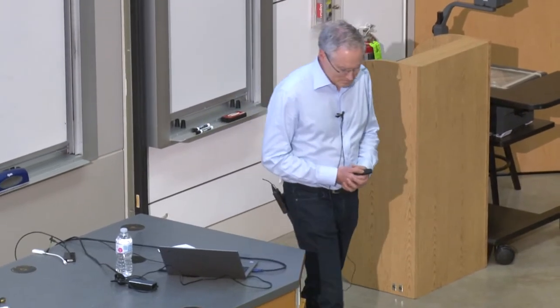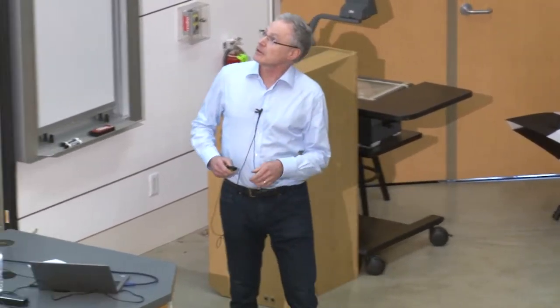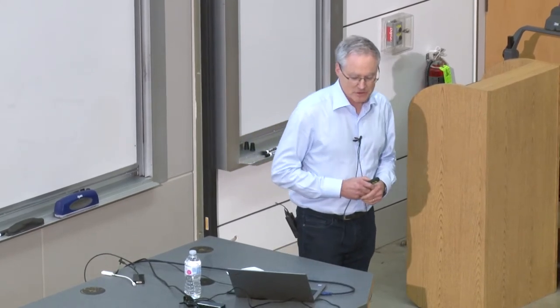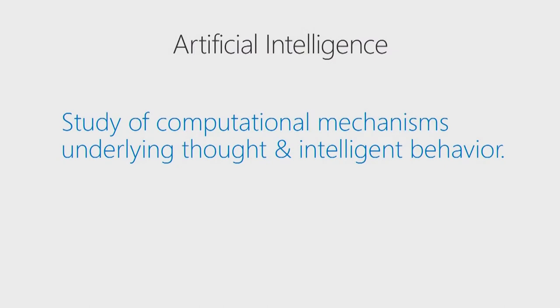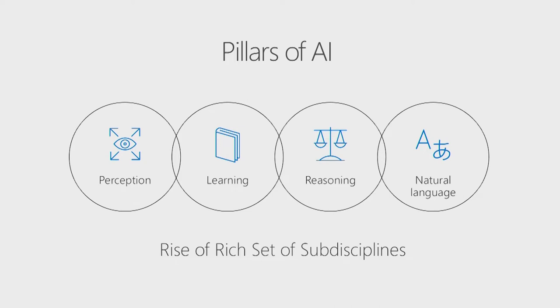Thanks very much. It's always a pleasure to come back to Stanford, and it looks like folks really went all out with making the weather comfortable for me, being a Seattleite. I thought today I would talk about AI and go back to the foundations. The definition I like is that artificial intelligence is the study of computational mechanisms underlying thought and intelligent behavior. The founders in 1955 were trying to find how to make machines solve the kinds of problems now reserved for humans. In their 1956 proposal, they called out perception, learning, reasoning, and natural language as four pillars of investigation.